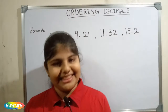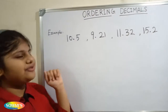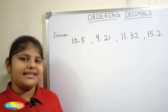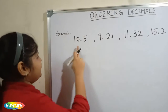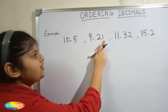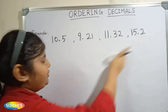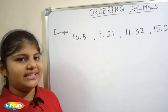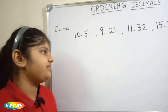Hi friends, in this video we are going to see how to arrange decimal numbers in ascending order. For example: 10.5, 9.21, 11.32, 15.2. First we have to check whether the decimal numbers are like decimals or not.